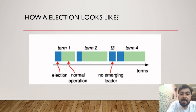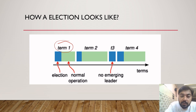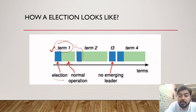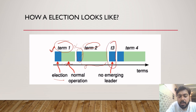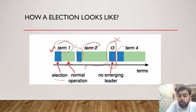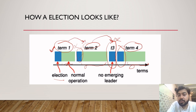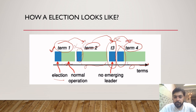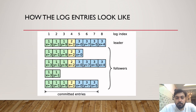How does an election look? Every election has a term — term one, term two, term three, term four, and so on. In term one, an election happens, everyone votes for a particular leader, normal operations proceed. Then the leader crashes, a new election happens — this is term two. A leader is assigned, normal operations happen, then the leader crashes again. A new election happens but results in no output because there is no majority — it's a tie. Then another election happens. The term is incremented each time an election happens, whether or not a leader is selected.